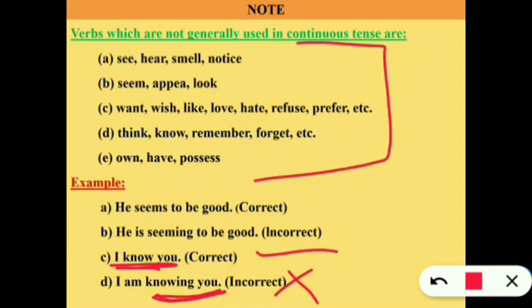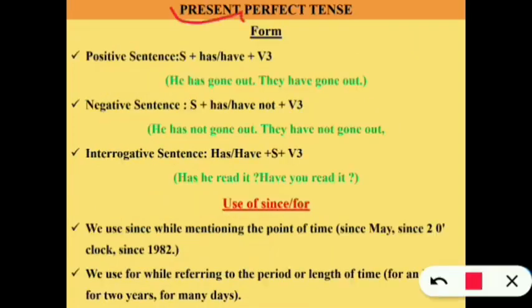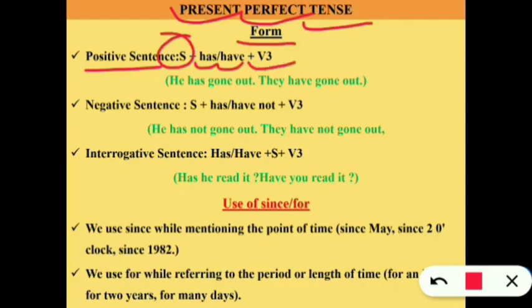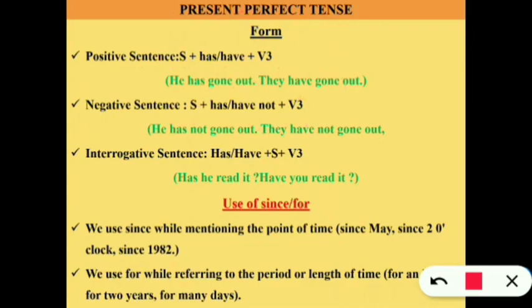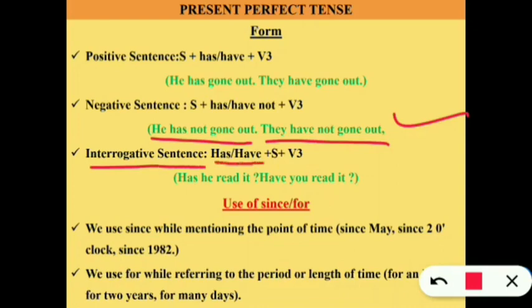Present perfect tense: in a positive sentence, the form is subject + has/have + verb 3. Example: 'He has gone out' (gone is verb 3), 'They have gone out.' In a negative sentence: subject + has/have + not + verb 3. Example: 'He has not gone out,' 'They have not gone out.' In an interrogative sentence: has/have + subject + verb 3. Example: 'Has he read it?' 'Have you read it?'